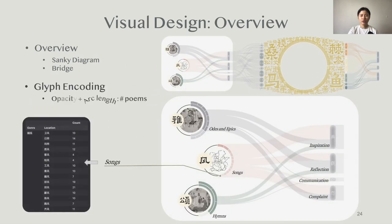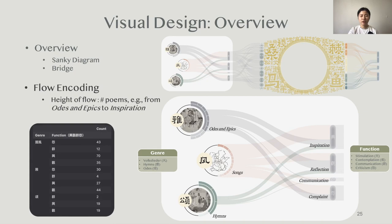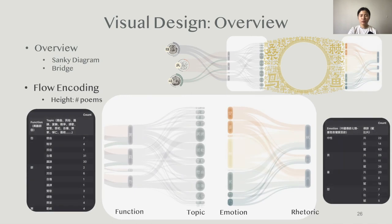We use different colors to represent different dimensions. The first node group is genre. We use the sunburst graph in the right half circle to show the detailed classification in songs, odes, epics, and hymns. The inner circular ring represents different sections, and we use opacity and arc length to double-encode the number of poems in each section. The height of the flow between genre and function encodes the number of poems belonging to both categories. Other flows also follow similar encoding, showing the number of poems between functions and topics, emotions, and rhetorics.